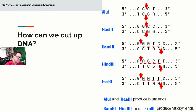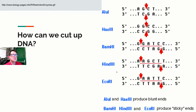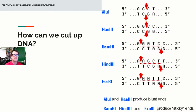One of the first things we can do is chop up DNA using what we call restriction enzymes. These are named things like Alu1, HaeIII, BamH1, HindIII, and EcoR1. For example, Alu1 cuts at the sequence AGCT, BamH1 cuts at GGATCC, and EcoR1 cuts at GAATTC. Those are the specific locations where the actual cut occurs.